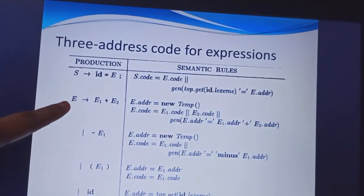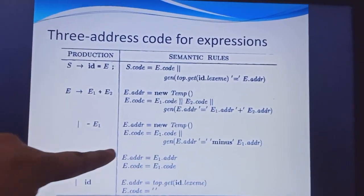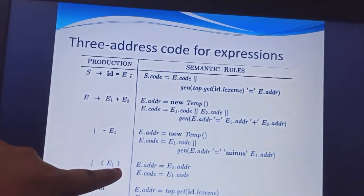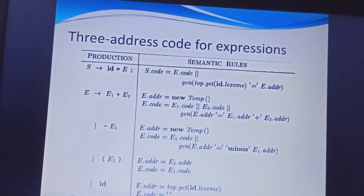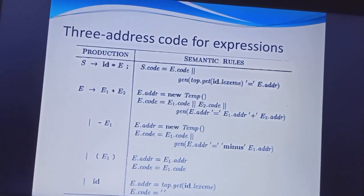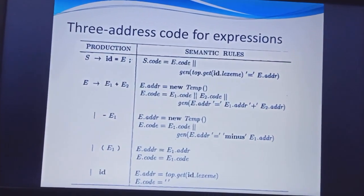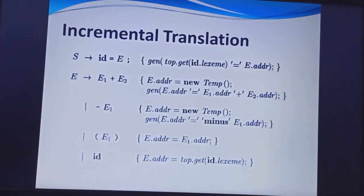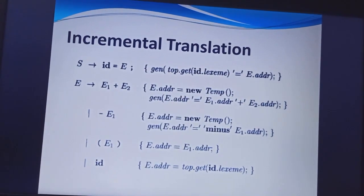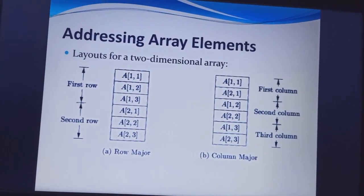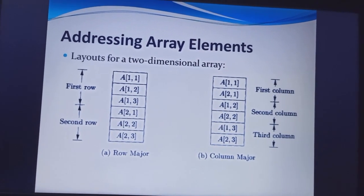Likewise, e1 minus e2, unary minus of addressing, and braces of e1. Next is the id value. And this is the incremental translations.